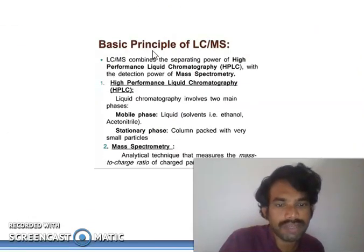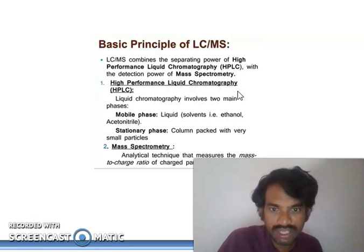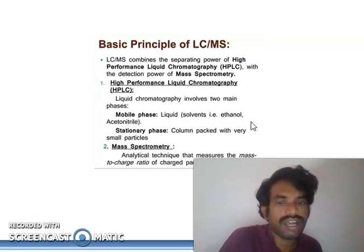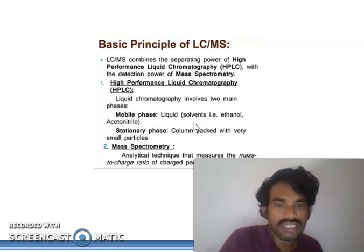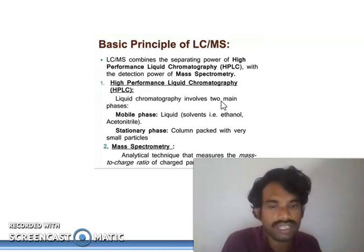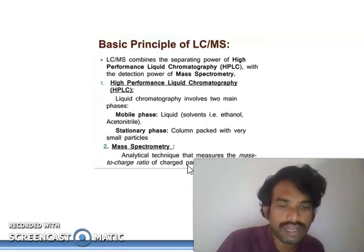The basic principle of LC-MS: LC-MS combines the separating power of high performance liquid chromatography with the detection of mass spectroscopy. High performance liquid chromatography involves two phases — one is a mobile phase, another one is a stationary phase. Mobile phase means a liquid form like solvents — ethanol, acetonitrile, others — which you can use depending on your compound nature. Stationary phase is the column packed with very small particles. So LC-MS contains two phases: mobile phase and stationary phase. Then our compound moves on to the mass spectroscopy.